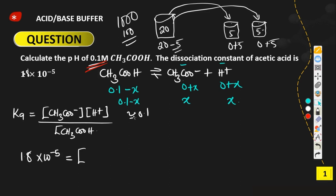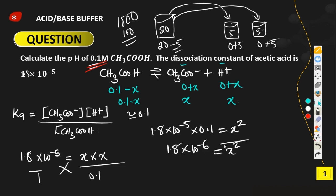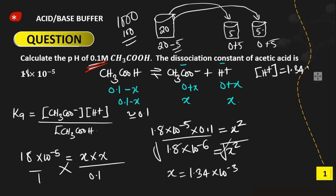The concentration of acetic acid is approximately 0.1. The amount of acetate and hydrogen ion are both x. So Ka = x² / 0.1. Cross-multiplying: 1.8 × 10⁻⁵ × 0.1 = x², giving 1.8 × 10⁻⁶ = x². Taking the square root: x = 1.34 × 10⁻³ mol/L. This x is the concentration of the hydrogen ion and also the acetate ion.